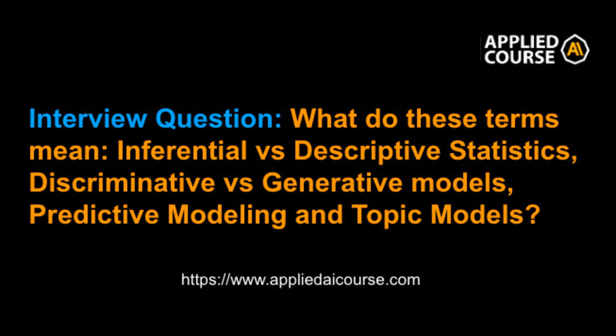The second term is inferential statistics. Inference basically means the process of coming up with or reaching a conclusion about some physical process. One very important part of inferential statistics is hypothesis testing, which we discussed in lots of detail in the course. For example, if I want to infer whether students from two different classes have different heights — if I want to determine that statistically — I use null hypothesis, alternative hypothesis, permutation testing, resampling — all of these techniques we discussed in hypothesis testing.